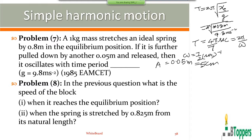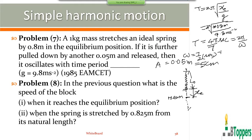You are asked to find the speed of the block in the second part of problem 8 — at the instant when the spring is stretched by 0.825 meters from its natural length. Let L0 denote the natural length of the spring, when it is neither stretched nor compressed, and xe is the elongation of spring in the equilibrium position of the mass. The block is further pulled down below this equilibrium position by 0.05 meters or 5 centimeters and released, so that will be the amplitude of oscillations.